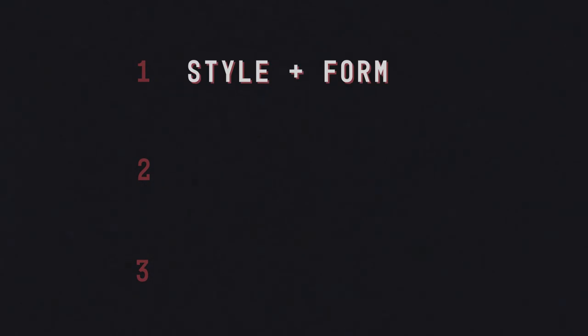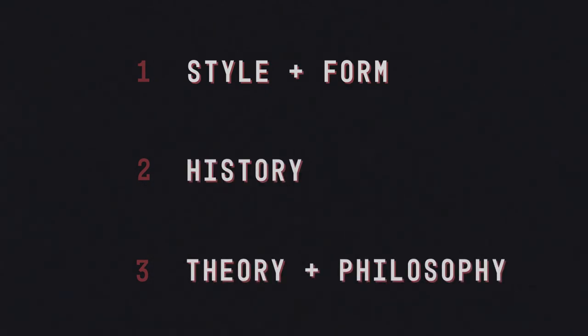In this video I will go over a list of 10 texts that, in my experience as a student of film at both an undergraduate and postgraduate level, provide a good introduction to the field of film studies. When compiling this list I tried to cover three broad areas that most undergraduate courses in film studies will cover: film style and form, film history, and film theory and philosophy. Studying all three areas is important to gain a holistic understanding of cinema, and once you begin to familiarise yourself with these areas it will become clear that all three are closely implicated.